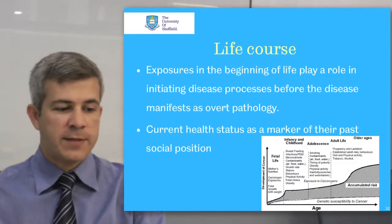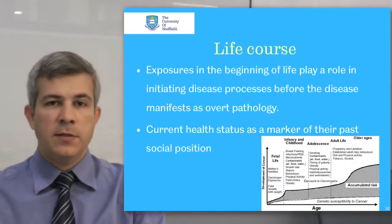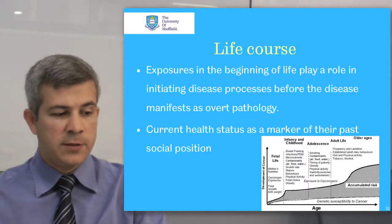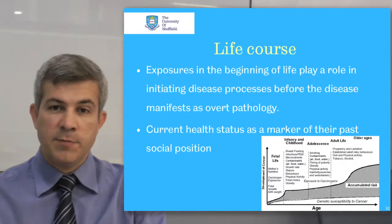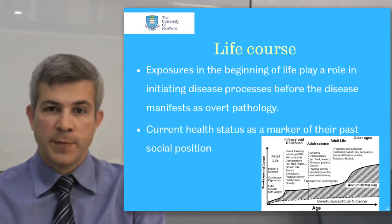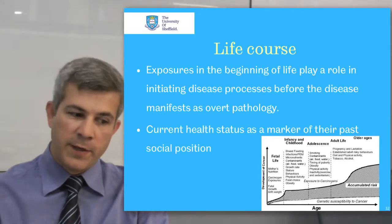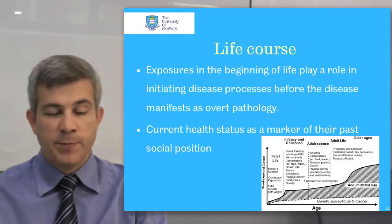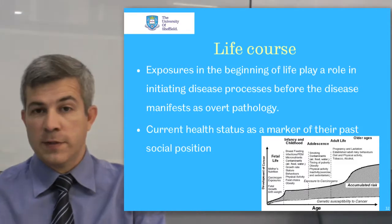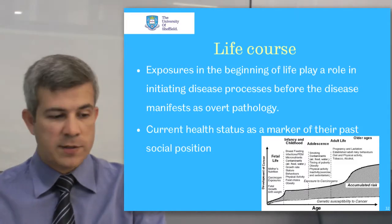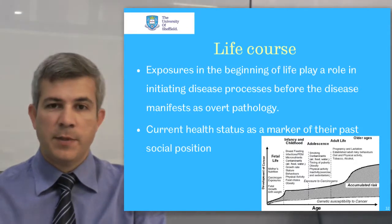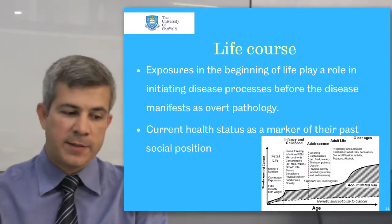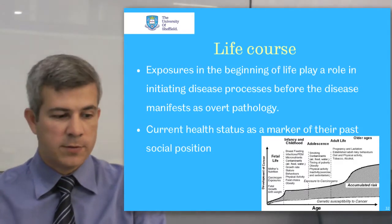This explanation suggests that exposures in the beginning of life play a role in initiating the disease process before the disease manifests as overt pathology. Early events in life combine to influence physical health and a person's ability to maintain it over time. The life course approach sees a person's current biological status as a marker of their past social exposure position.